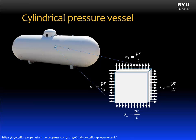This explains why the pipe shown previously fractured in the longitudinal direction — the hoop stress was the greater stress, and so the brittle pipe material cracked perpendicular to the tensile stress direction.